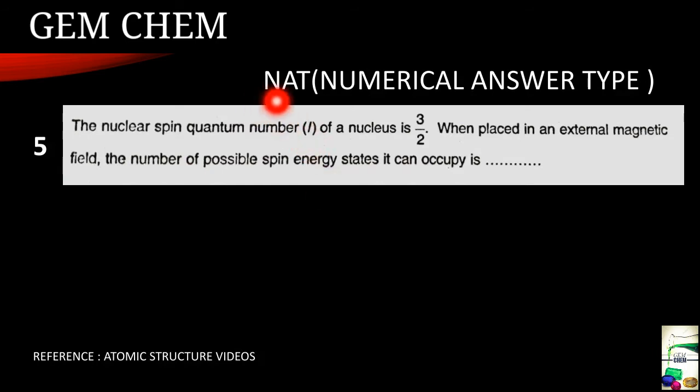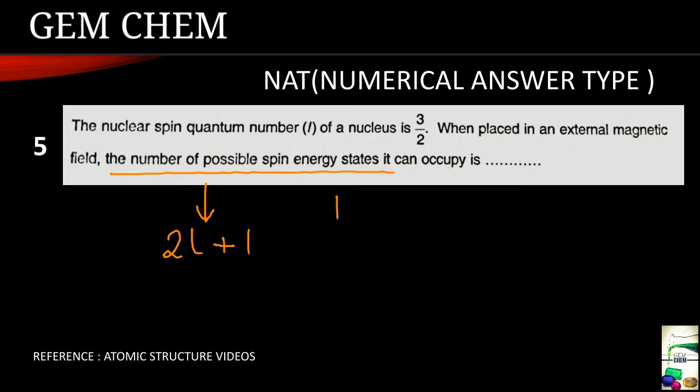Now the next one is a NAT question, that is numerical answer type question. The nuclear spin quantum number I of a nucleus is 3 by 2 and when placed in an external magnetic field the number of possible spin energy states it can occupy is. The formula for this, the number of possible spin energy states it can occupy is given by a simple formula 2I plus 1 and here we have seen that I is given as 3 by 2.